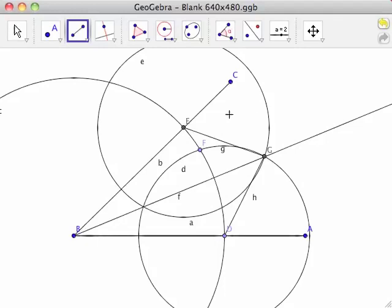Therefore, triangles BEG and BDG are congruent by the side-side-side congruence postulate.